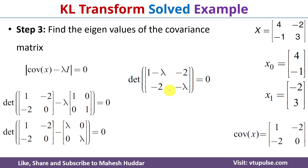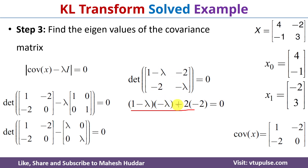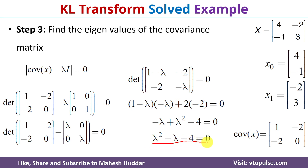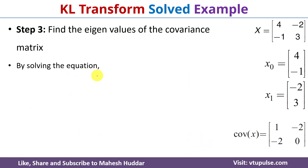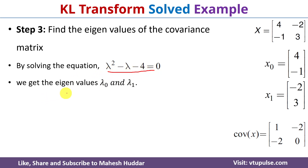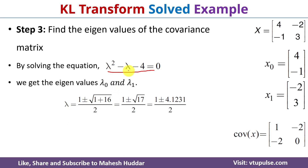To find the determinant we compute (1-lambda)(-lambda) minus (-2)(-2), and simplify. This gives lambda squared minus lambda minus 4 equals 0. This is a quadratic equation, so we solve it to get the eigenvalues lambda 0 and lambda 1, using the quadratic formula: lambda equals (1 ± √(1+16)) / 2.